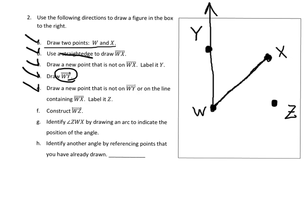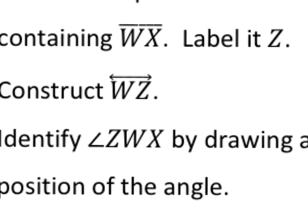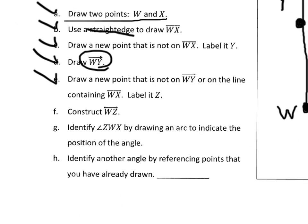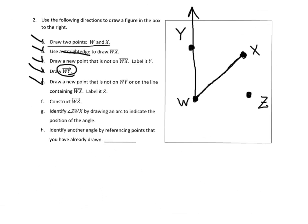Step F says construct the line WZ. This is a perfect example — this notation has arrows on both ends, which means it goes on forever in both directions. That's a line. So the line WZ has to go through W and Z but goes forever in both directions. It's okay that I kind of crashed into the letter W.